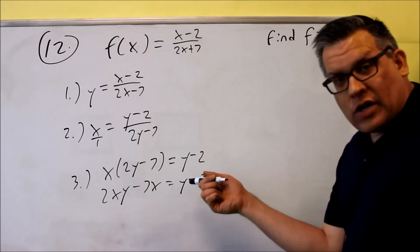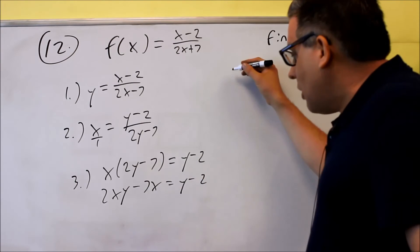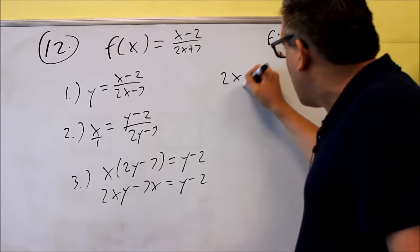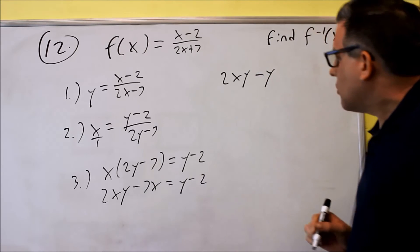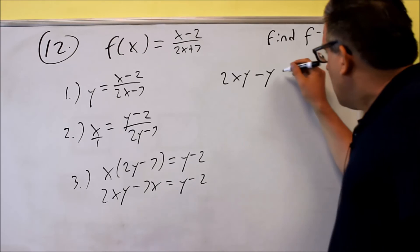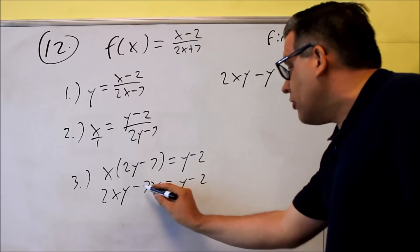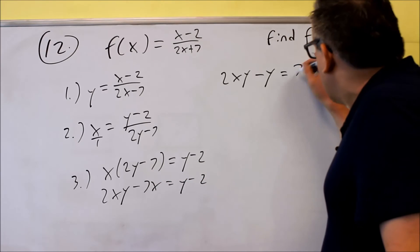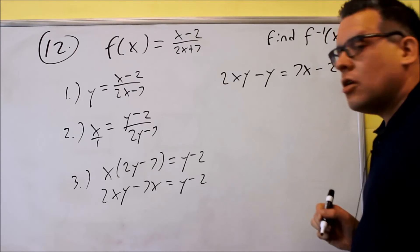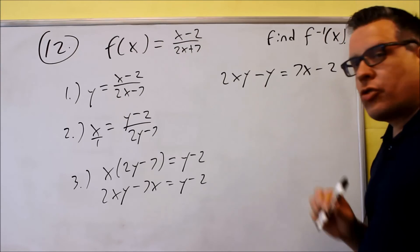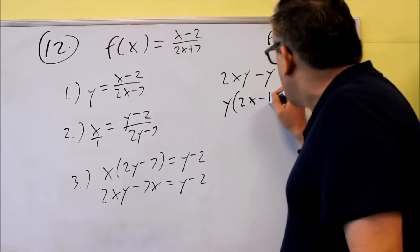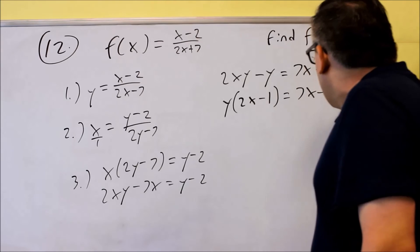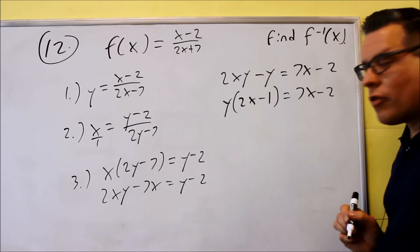I want to move, put all the y's on one side of the equation. I'm going to do 2xy, I'm going to take this y across the equal sign, so 2xy minus y. On the other side, I'm going to move the 7x over across the equals, so I get 7x minus 2 over there. Now that I have both the y's on one side, I'm going to isolate that by pulling it out. So I pull out a y, I get 2x minus 1 there, and I get 7x minus 2 left over.